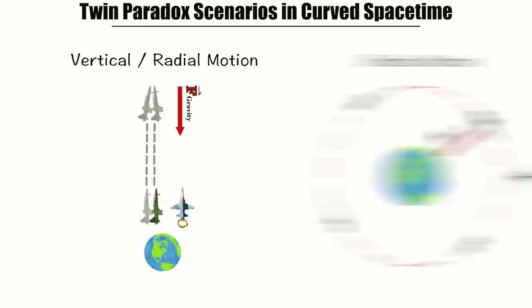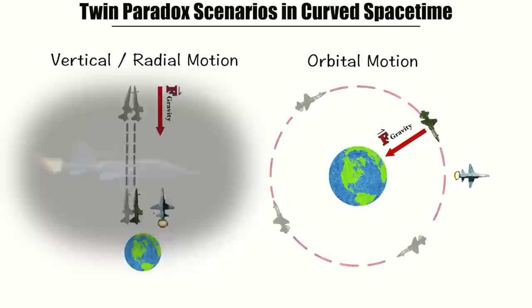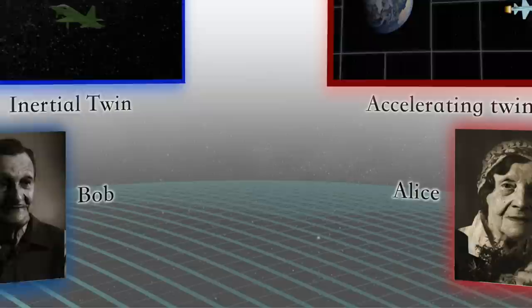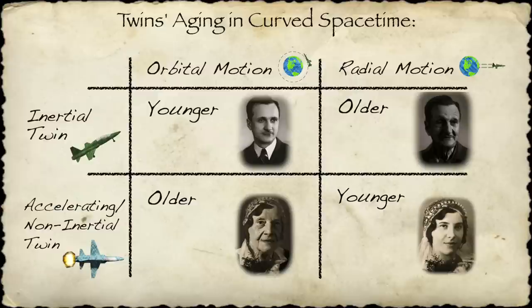This setup resembles the orbital setup in the fact that the twin who stays in place has to accelerate, while the twin who is traveling is in inertial freefall for the entire trip. Now, however, the outcome is reversed. The unaccelerated, freefalling twin is older upon the twins' reunion, while the accelerating twin is younger, showing that curved spacetime can accommodate solutions in which the accelerating twin can be either younger or older.